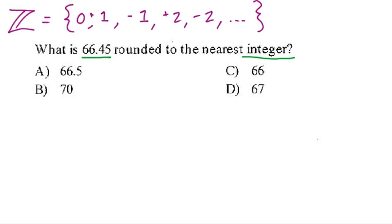So really, they're asking you to round this to the nearest whole number because this number is already positive, and this positive number is much closer to any positive integer than any negative integer.